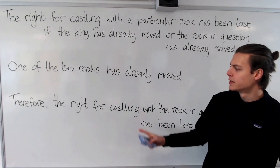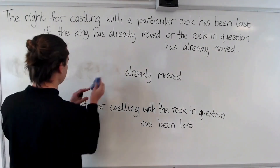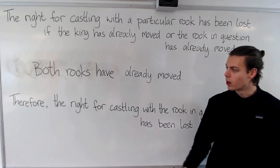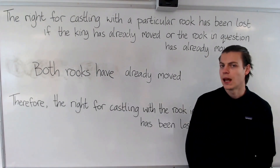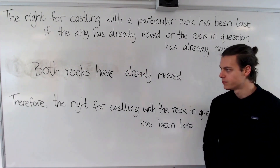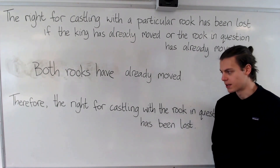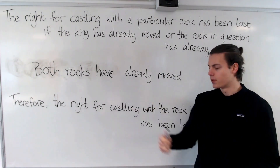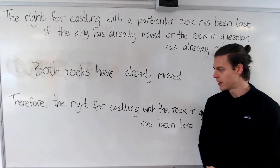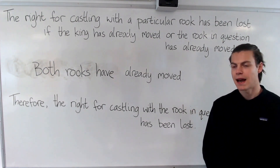Now consider a slight tweak on the second statement. Now we are told that both rooks have already moved, and we're given the same rule about when we lose the right for castling. This time this is a valid deduction — since both rooks have already moved, we know that in particular the rook in question must have moved. And so yes, we can deduce that the right for castling with the rook in question has been lost.